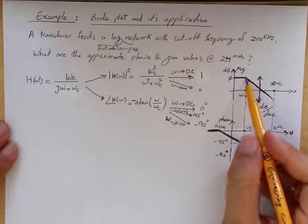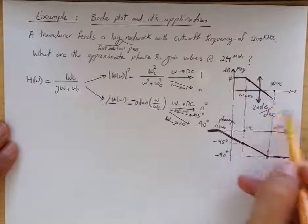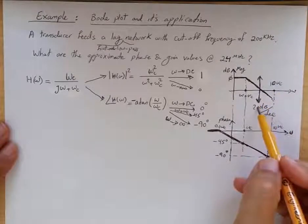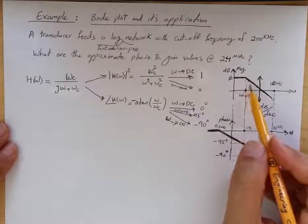At ω equal to ωc, we approximate from that point on to infinity. For every 10 times increase in frequency, we get 20 dB reduction in magnitude.